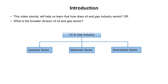The oil and gas sector is broadly divided into three sectors: number one is the upstream sector, number two is the midstream sector, and number three is the downstream sector. We will discuss these three sectors one by one.